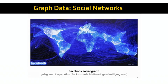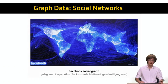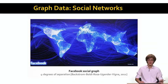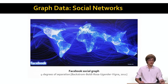If we think about graphs, graphs are everywhere. For example, social networks like Facebook and Twitter can very naturally be represented as graphs — as a set of nodes and a set of edges, or connections between them.